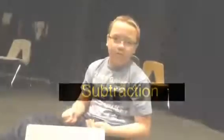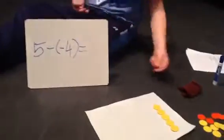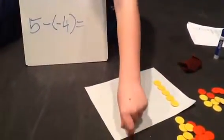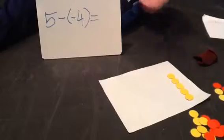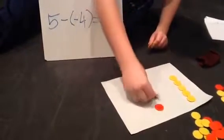That's a pretty typical problem. My problem here is five minus negative four. This is what we are going to do. As you see, I have positive five out. And what it says is take away a negative four, but there's no negative four. What you do is you add them.